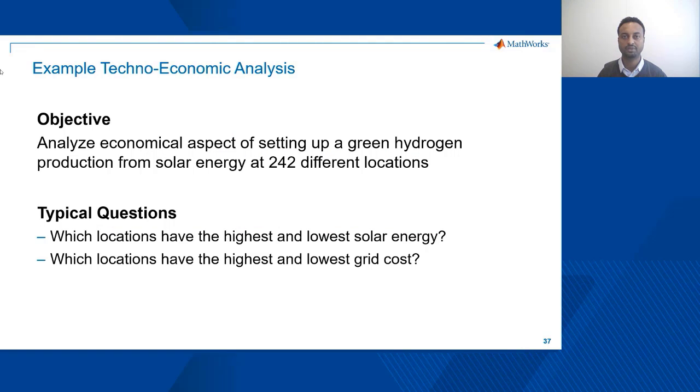As we explore the concept we'll consider an example techno-economic analysis for setting up a green hydrogen production from solar energy at 242 different locations. Using our analysis we will answer typical questions like which locations have the highest or the lowest solar energy or which of those 242 locations have the highest and the lowest grid cost.